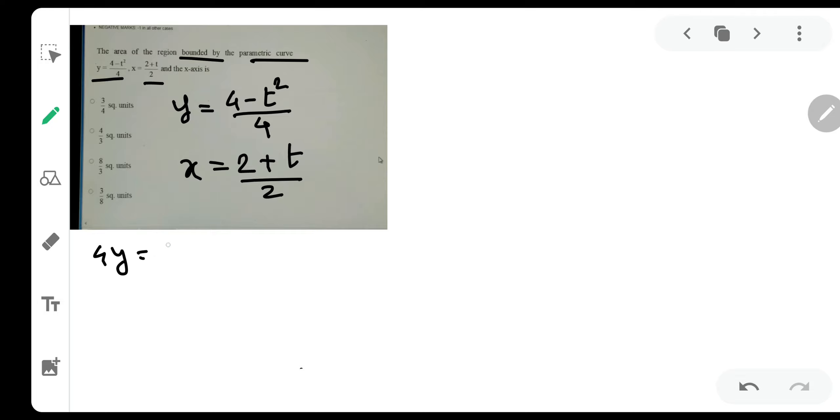Now how do I do that? Let us say 4y equals 4 minus t square. And 2x equals 2 plus t. So what will be the value of t? It will simply be 2x minus 2.